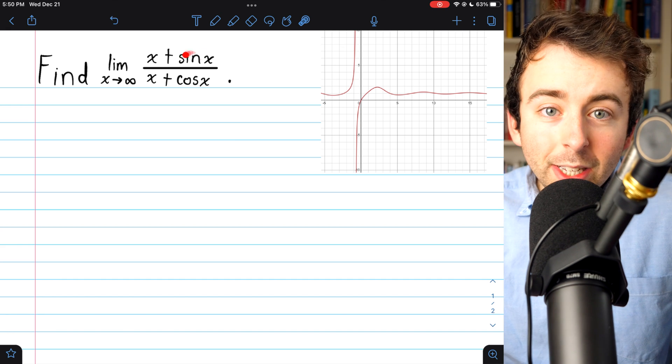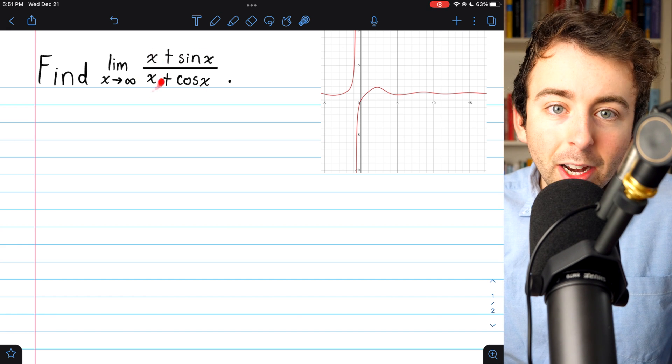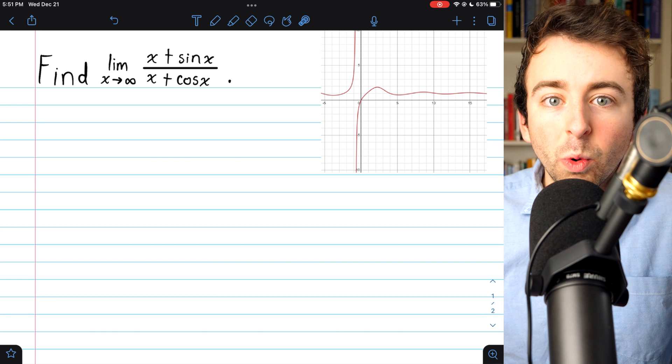since sine x and cosine x will just fluctuate between negative 1 and positive 1 as x goes to infinity. And so, in effect, they really don't matter much. The big players here are x divided by x, and that's just going to equal 1.